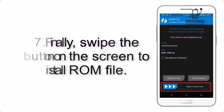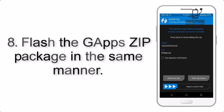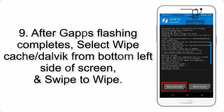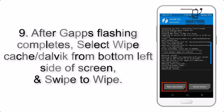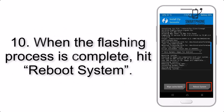Step 7: Swipe the button on the screen to install the ROM file. Step 8: Flash the Gapps zip package in the same manner. Step 9: After Gapps flashing completes, select Wipe Cache and Dalvik from the bottom left side of the screen and swipe to wipe.